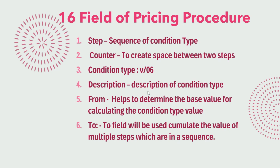The first field is the Step. Step is actually the sequence of the condition types. In a pricing procedure, this first field decides the sequence of condition types. For example, a basic value or MRP comes first, then taxes, then surcharges, etc. It decides which condition type falls in which sequence.